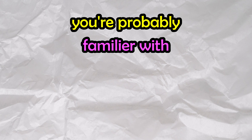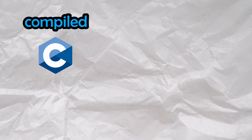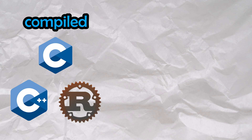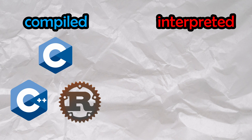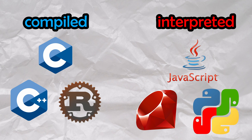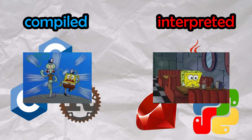You're probably familiar with the fact that some languages are compiled, such as C, C++, and Rust, and some are interpreted, such as JavaScript, Ruby, and of course Python. Compiled languages are known for their blazing fast speeds, and are often used to make fun of how sluggish their interpreted counterparts are.